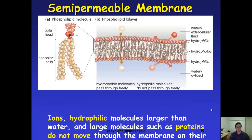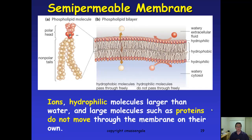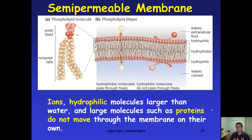On the other hand, polar molecules and large molecules will not be allowed to move through the membrane. This includes things like proteins — for example, what surrounds viruses and bacteria — as well as enzymes, messengers, and ions, which are charged. Glucose, sugar, and all those hydrophilic things will have trouble getting through the membrane.